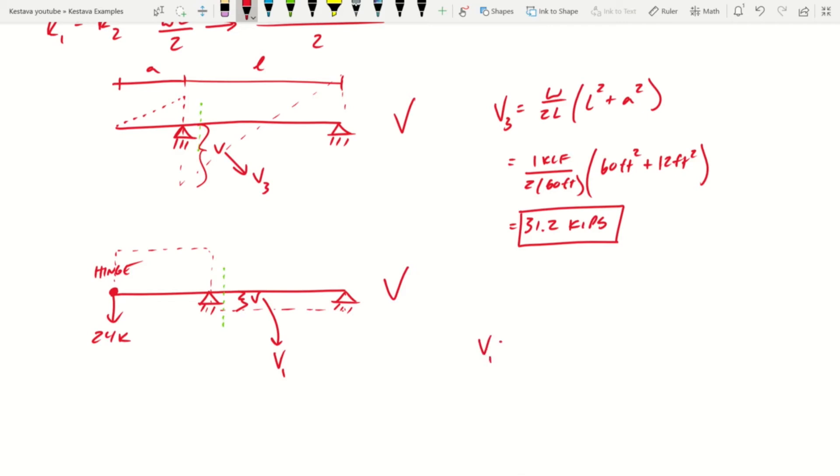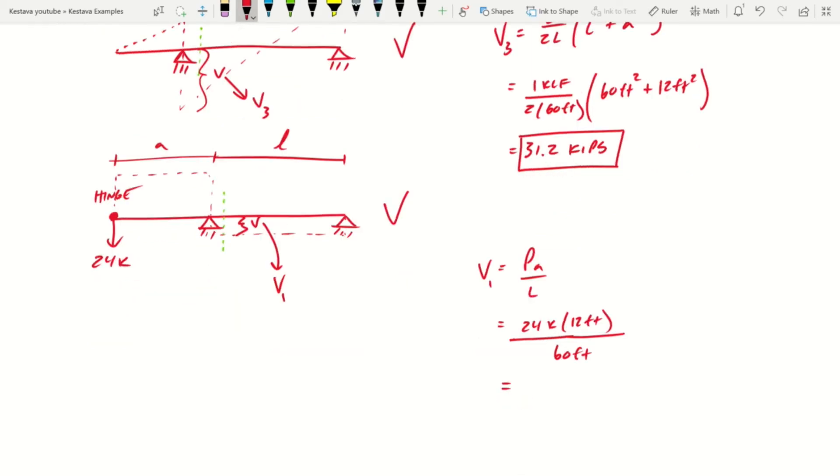That is denoted as V1 in the equations. V1 is equal to PA over L. Again, A is our cantilever, L is our prop. And then P is just the point load at the end. So that breaks down into the following. That equals 4.8 kips. So again, we'll hang on to that value as well.